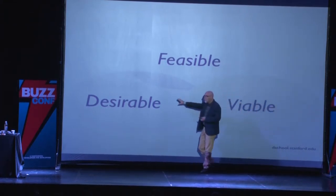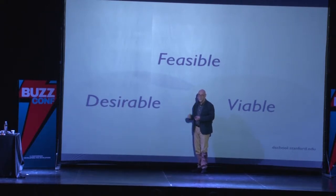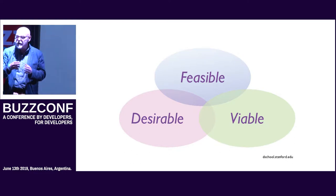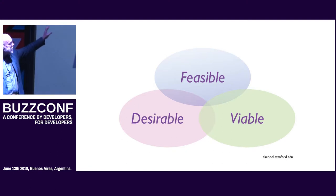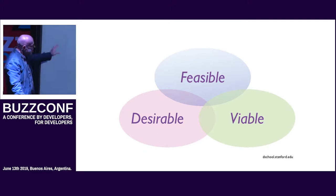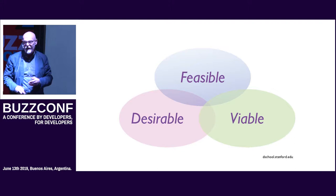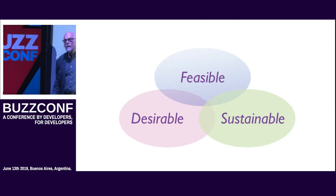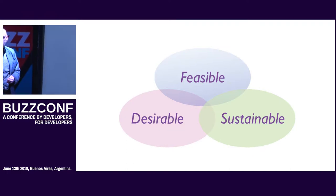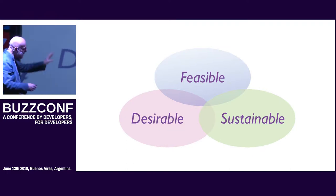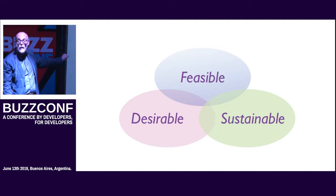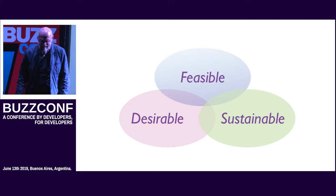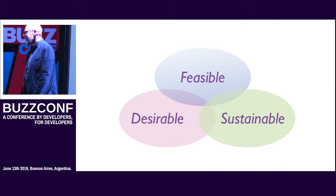We teach our beginning students about product design — they do an exercise where they think about three aspects. One is feasibility: can you actually build this? If you can't build it, there's no point going further. The next thing is viability: can you actually make money out of it? You might be able to produce it, but it could be so expensive to produce that nobody is going to buy it. And you also need people to want to use it — it needs to be desirable or usable.